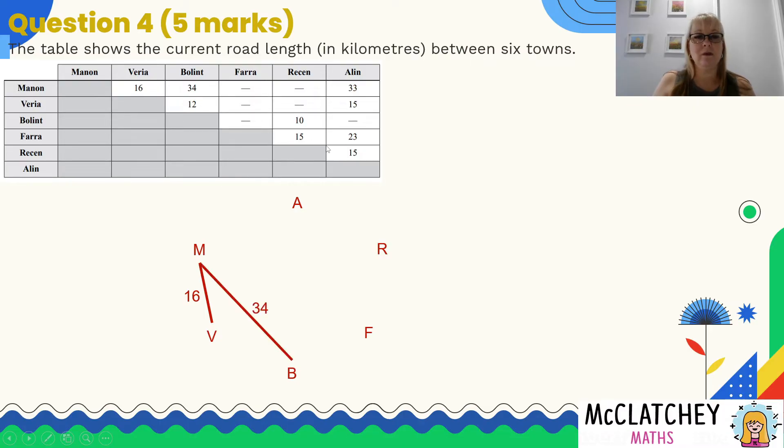So that's the first one that I've got here. I'm actually just going to work along the first row, then the second row and so on. So the next one that I can see is Manon to Balint and that's 34, so I'm going to draw a straight line between there. You can use a ruler, you can freehand it, it doesn't really matter. The next one is coming across that top row, the next one is Manon to Allen and that's 33.